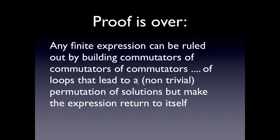This ends our proof for any expression. We look at how many nested roots it has, then build the 120 different loops giving all the permutations. We can choose a level of commutators of commutators equal to the number of nested roots, such that on the one hand each result of the expression is guaranteed to return to itself, and on the other hand, if chosen correctly, the solutions do not return to themselves — and hence we can rule out this expression.